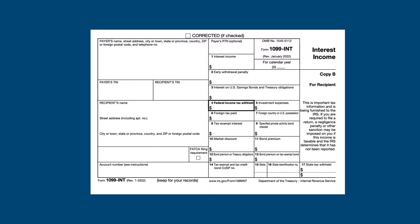Interest is reported on Form 1099-INT. Just like W-2s, this form comes in a variety of formats, and as long as the payer provides the legally required information to you within the required time frame, it is not necessary to use the exact form. We're going to use this Form 1099-INT to talk about interest, its effect on your taxes, and where the various amounts are reported on the tax return. We're not going to look at all the boxes on the form, just those that are most commonly used.